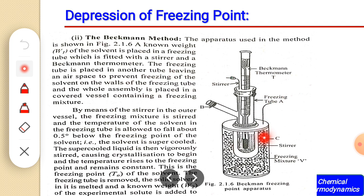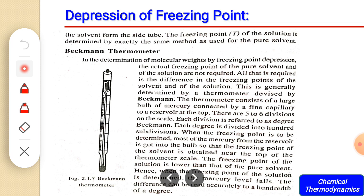By means of a stirrer in the outer vessel, the freezing mixture is stirred and the temperature of the solvent in the freezing tube is allowed to fall about 0.5° below the freezing point of the solvent, making it supercooled. The supercooled liquid is then vigorously stirred, causing crystallization, because a small disturbance to the supercooled liquid will result in the formation of crystals.